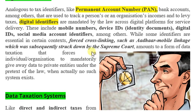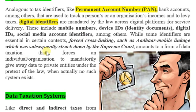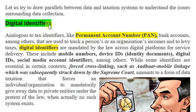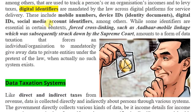The very problem is the cross-linking of these identifiers. In the Puttaswamy judgment, the Supreme Court held that forced cross-linking such as the Aadhaar-mobile linkage is unconstitutional and struck it down. Such cross-linking amounts to data taxation that forces an individual or organization to mandatorily give away data to private entities under the pretext of law, when actually no such legal basis exists. Digital identifiers essentially deal with tracking a person's digital activity and transactions.